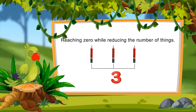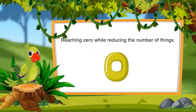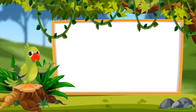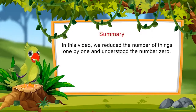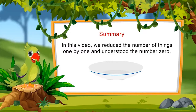Can you also reduce the number of things around you one by one until you reach the number zero? So children, that was all for today. In this video, we reduced the number of things one by one and understood the number zero. See you soon in our next video. Till then, goodbye children.